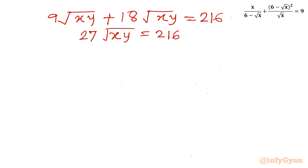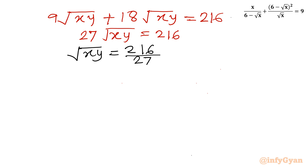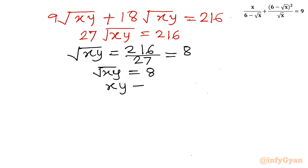Dividing both sides by 27: 216 over 27 equals 8. So √(xy) = 8, which means xy = 64.